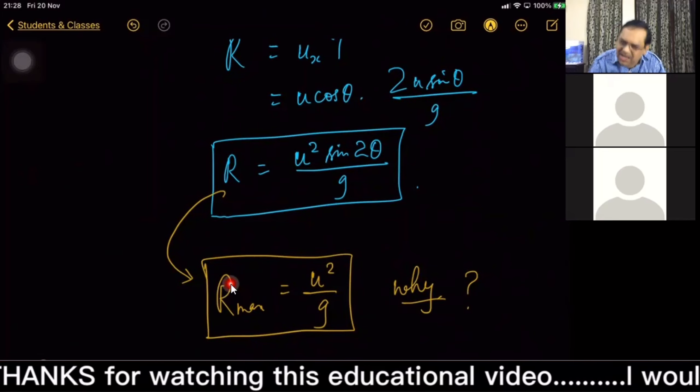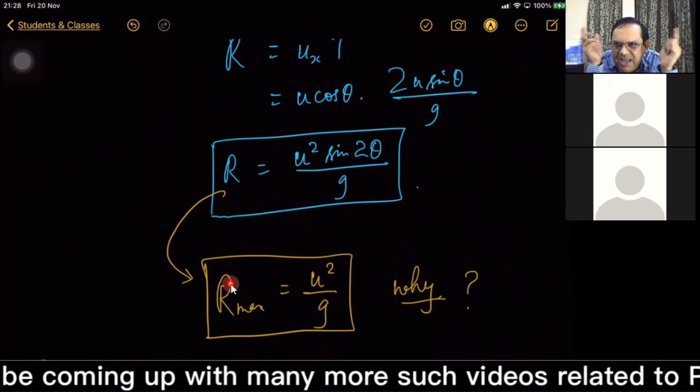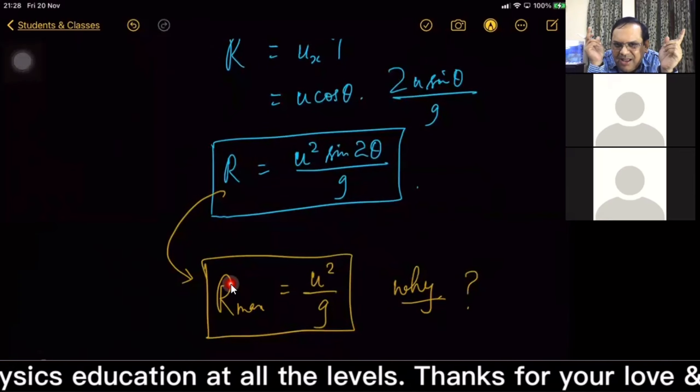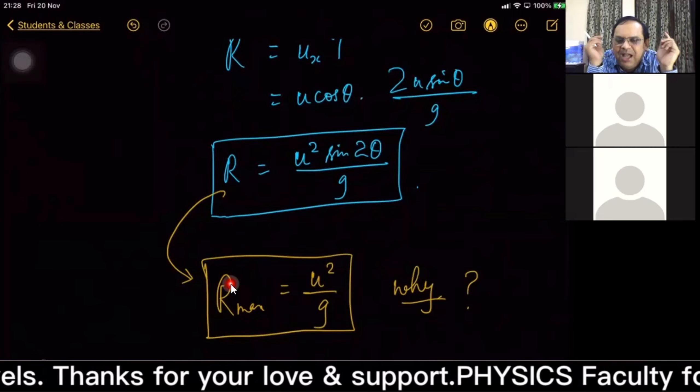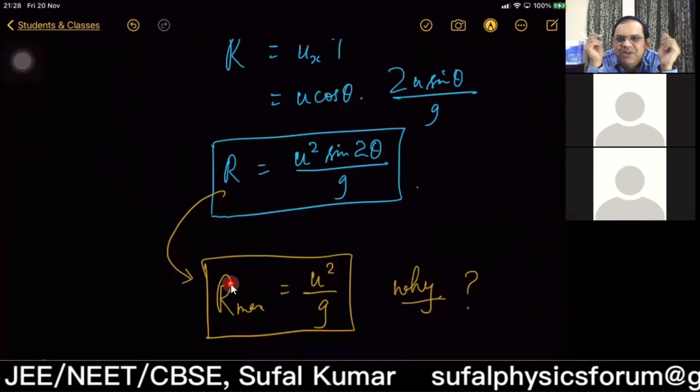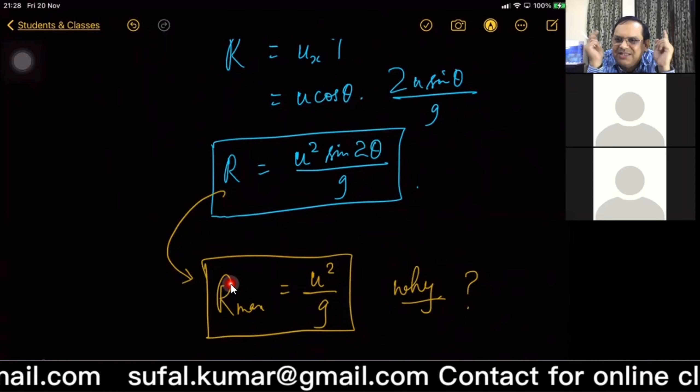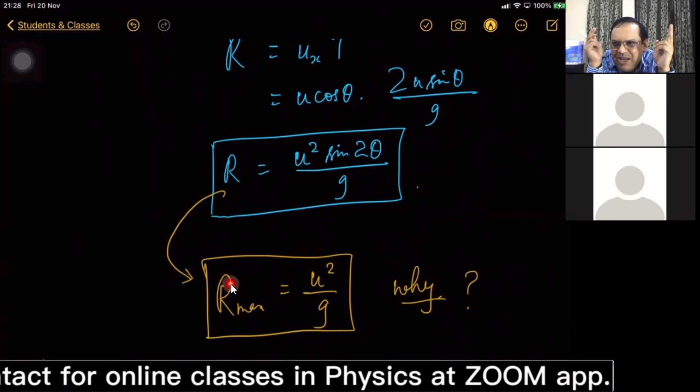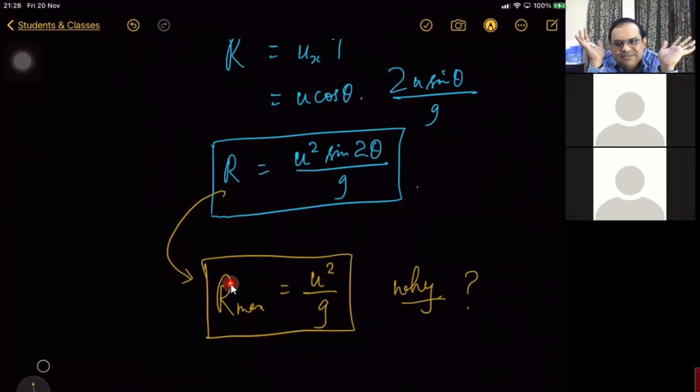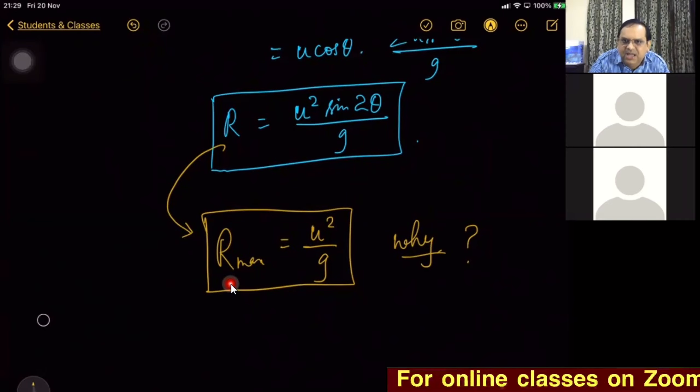Now still maximum value of R is u² / g. Why? Because any mathematical expression which consists of sine function or cos function - lagta hai aapne pakar liya - any mathematical equation or formula which consists of sine or cos function, then sine and cos function has maximum value of plus one and minimum value of minus one. All of you must be knowing, yes sir.